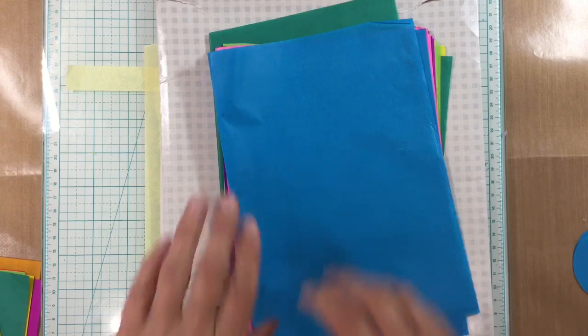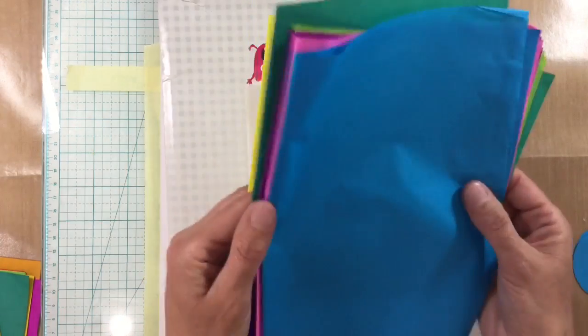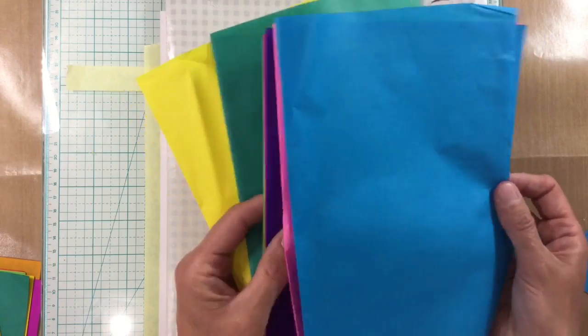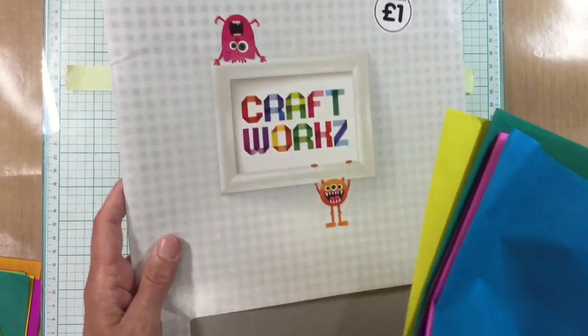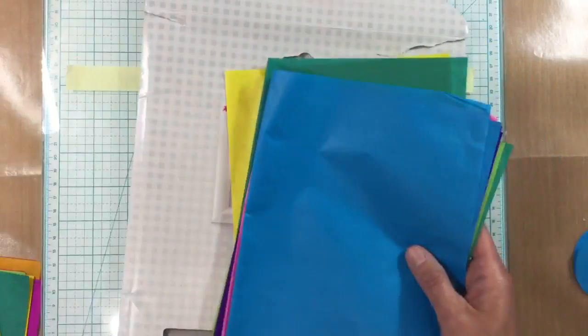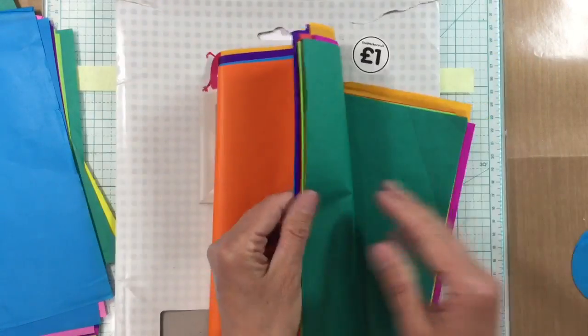They vary in price. Some are quite expensive whereas a lot of the kids tissue paper will work in much the same way but it is trial and error. So as I say mine was a pound from The Works. It comes in a pack with all these different colors here.